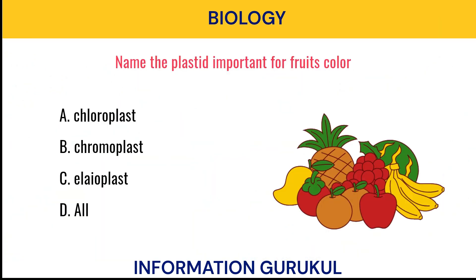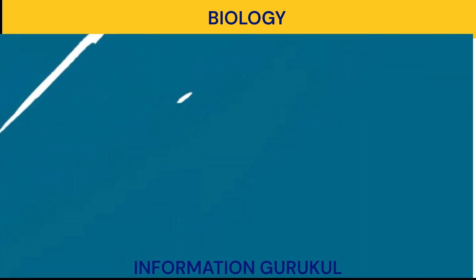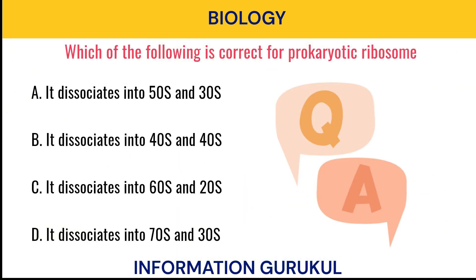Name the plastid important for fruit color. Chromoplast. Which of the following is correct for prokaryotic ribosome? It dissociates into 50S and 30S subunits.